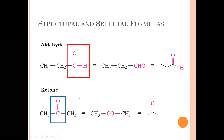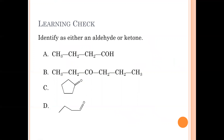Aldehydes will always occur at the end of a molecule, which makes naming easier because they'll always be at carbon one. A ketone can occur anywhere inside — it will never be on the end; it'll occur somewhere in the middle. So ketones are in the middle, and aldehydes are on the ends.